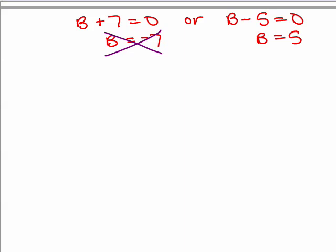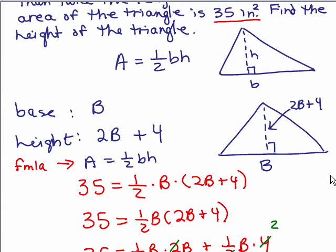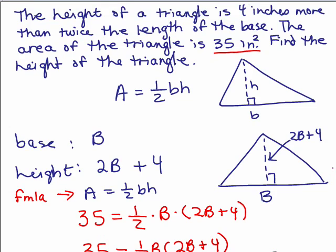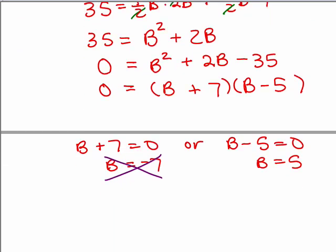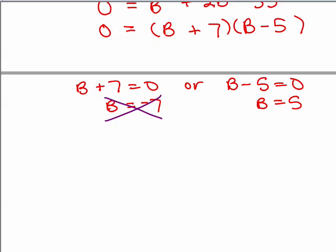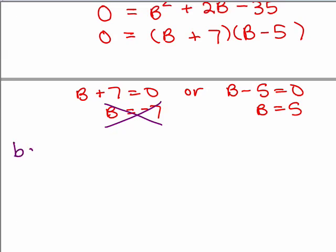What's the original problem asked for? Find the height of the triangle. Hmm, it's not even asking for B. And the height was 2B plus 4. All right, so remember, we said the base was B and the height was 2B plus 4. So for the base, I add 5 and 2B plus 4 would be 14.